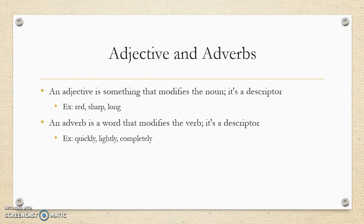Adjectives and adverbs are the things that modify your subjects or verbs — they're descriptors. For example: red, sharp, long nails — 'nail' is your noun, and 'red,' 'sharp,' and 'long' each describe it. An adverb modifies your verb: she danced well, quickly, lightly, completely. Notice that adverbs often end in '-ly.'